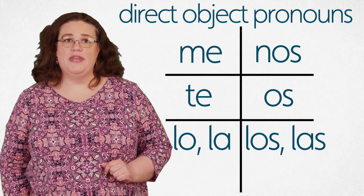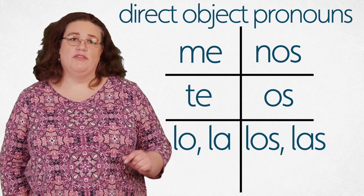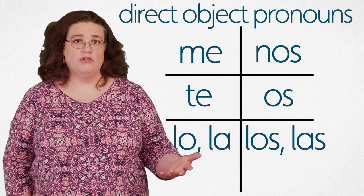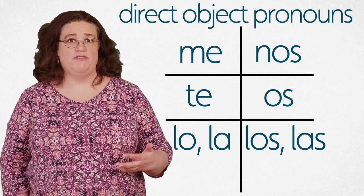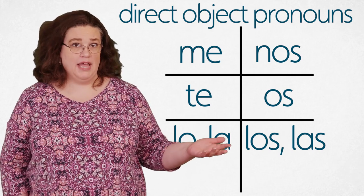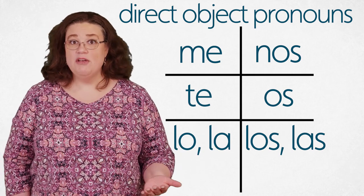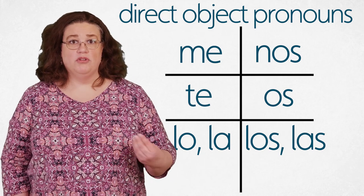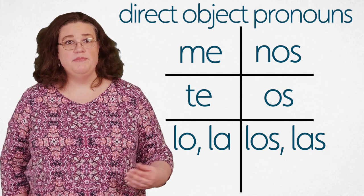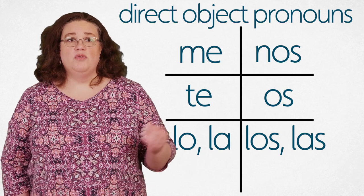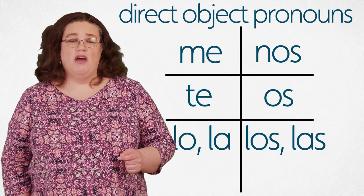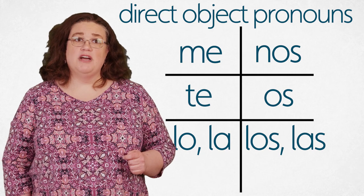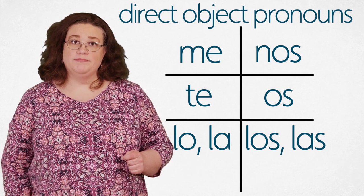You have to agree with the noun or pronoun that you're replacing. If you're replacing a female noun, you have to use a female pronoun — la or las. If you're replacing a male noun, you have to use a male pronoun — lo or los. Also, remember that your direct object pronouns have to come directly before your verb.